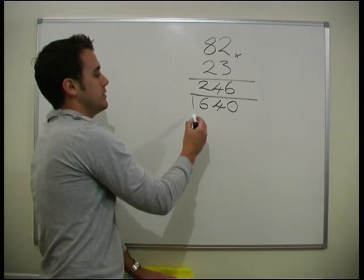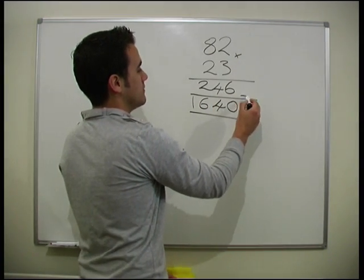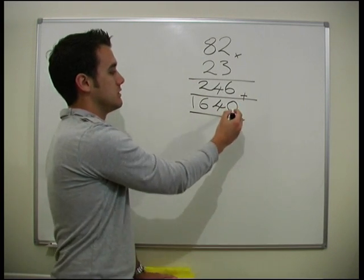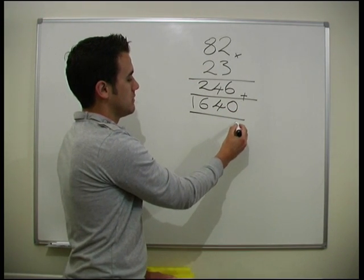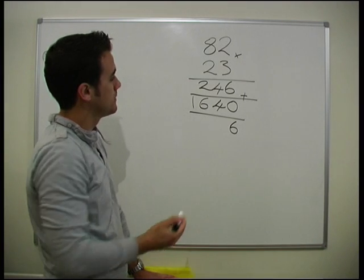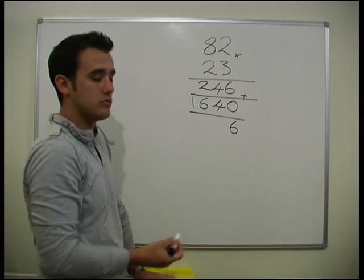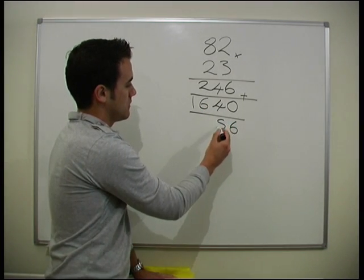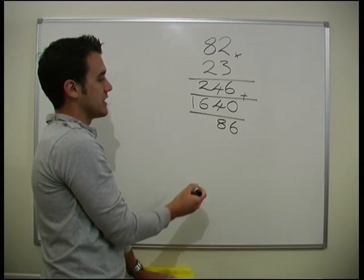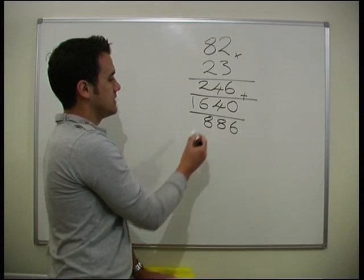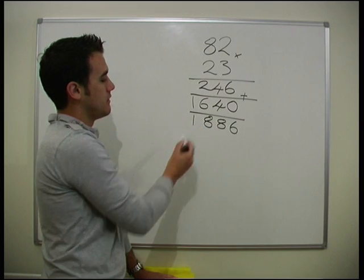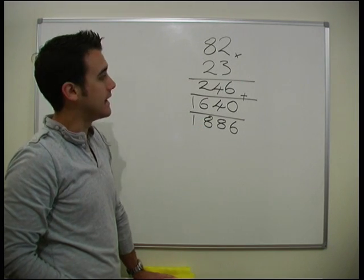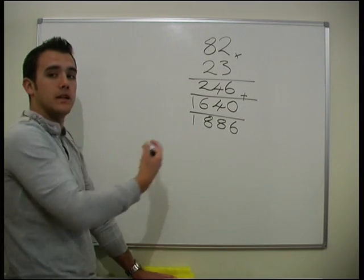Add that. So now we've got our two numbers. We just need to add them together. So 6 plus 0 is 6. 4 plus 4 is 8. 2 plus 6 is 8. And we've got the 1. 1,886. It's that straightforward.